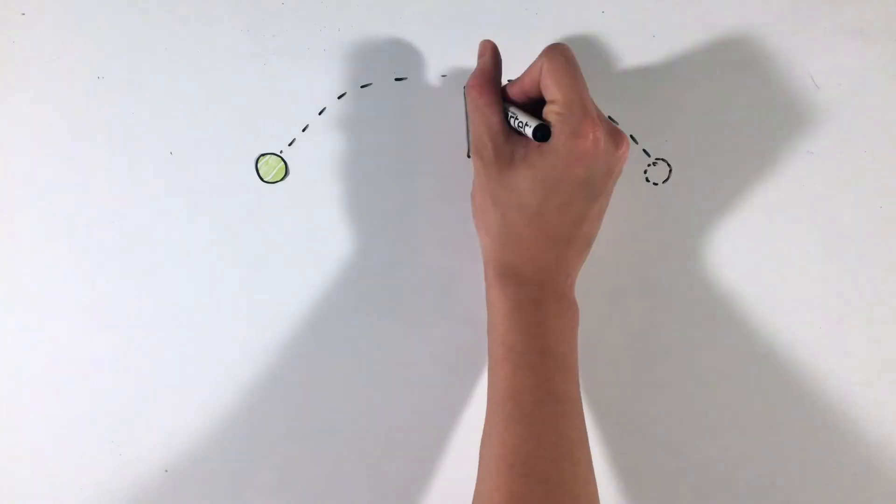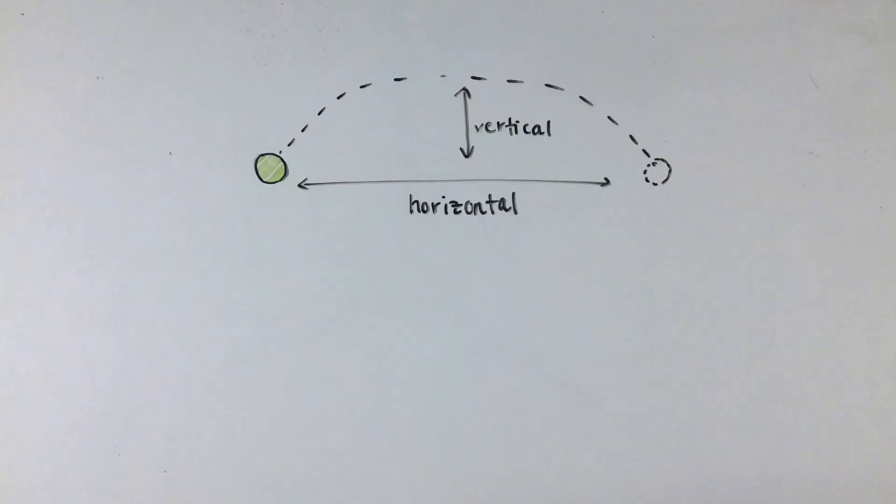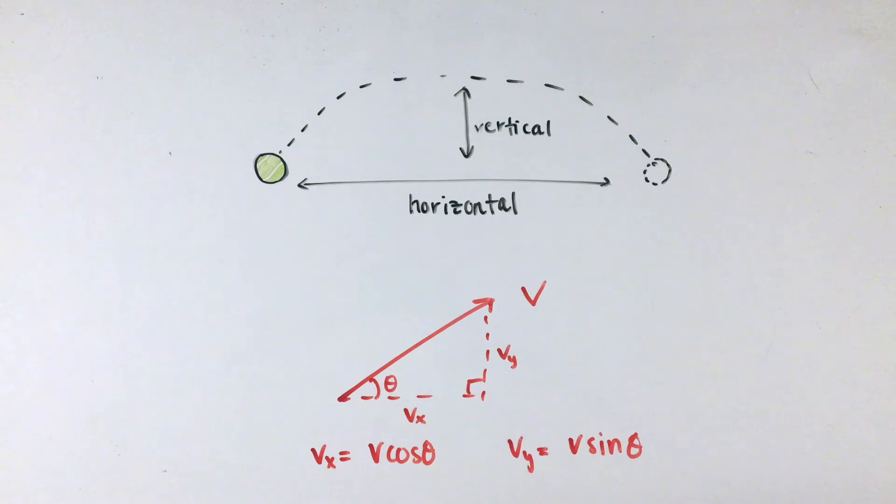Now this motion can look confusing at first, but there's really only one piece of vital information to know to solve these problems. The horizontal and vertical components of an object's motion are completely independent. In other words, the vertical height, velocity, and acceleration of a ball being thrown are completely unrelated to the horizontal position and velocity, with the velocity components v sub x and v sub y being found through simple trigonometry.